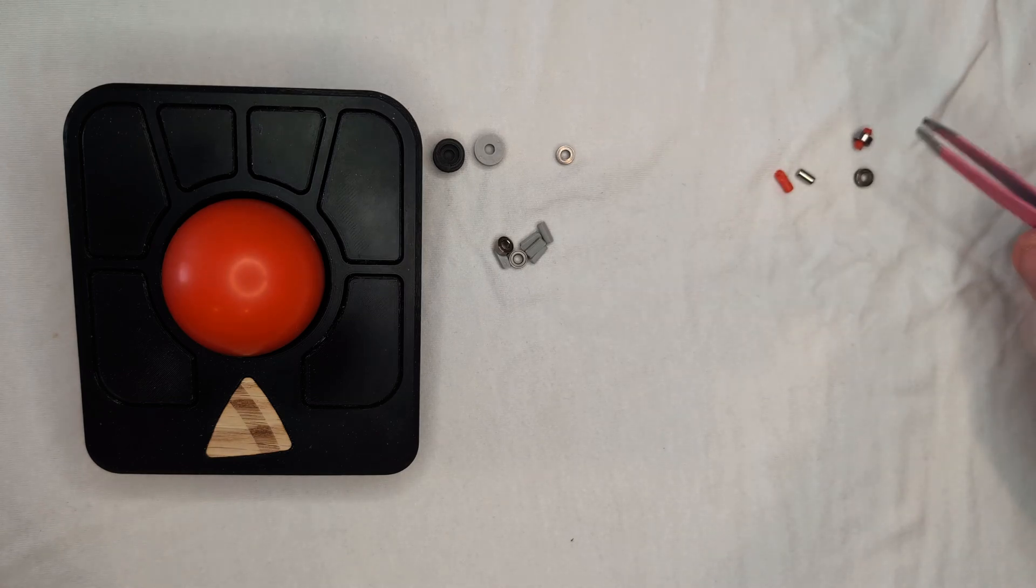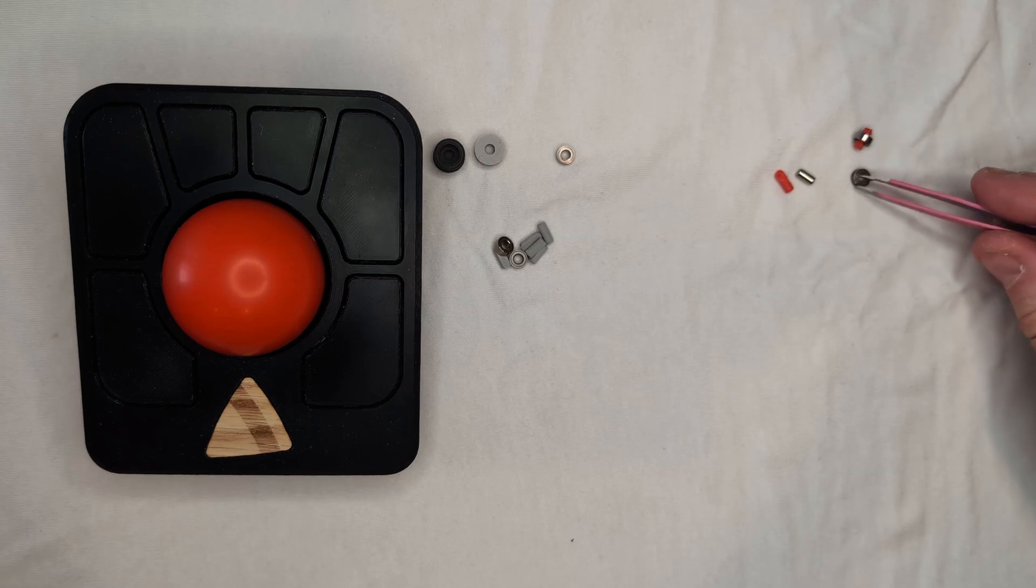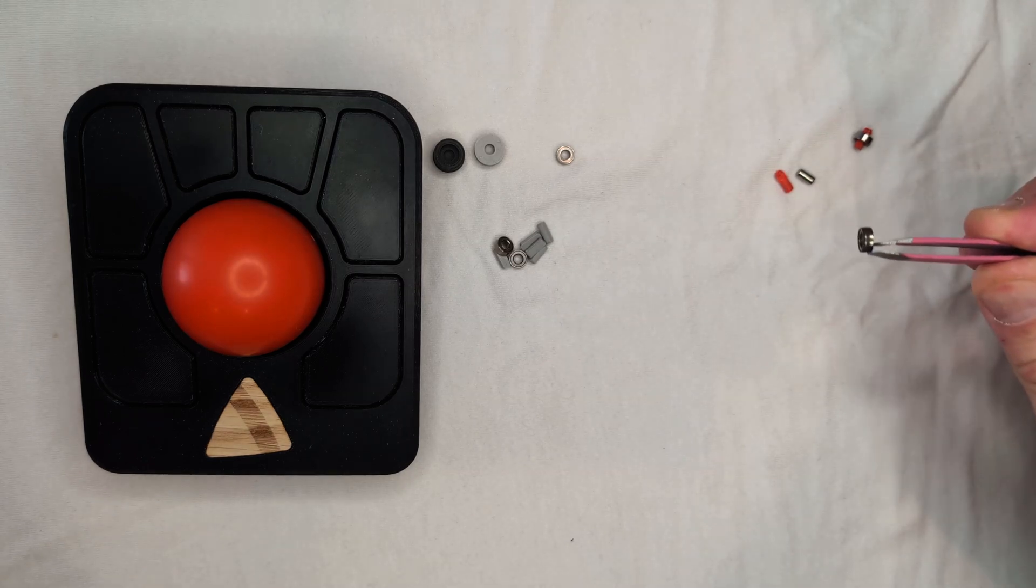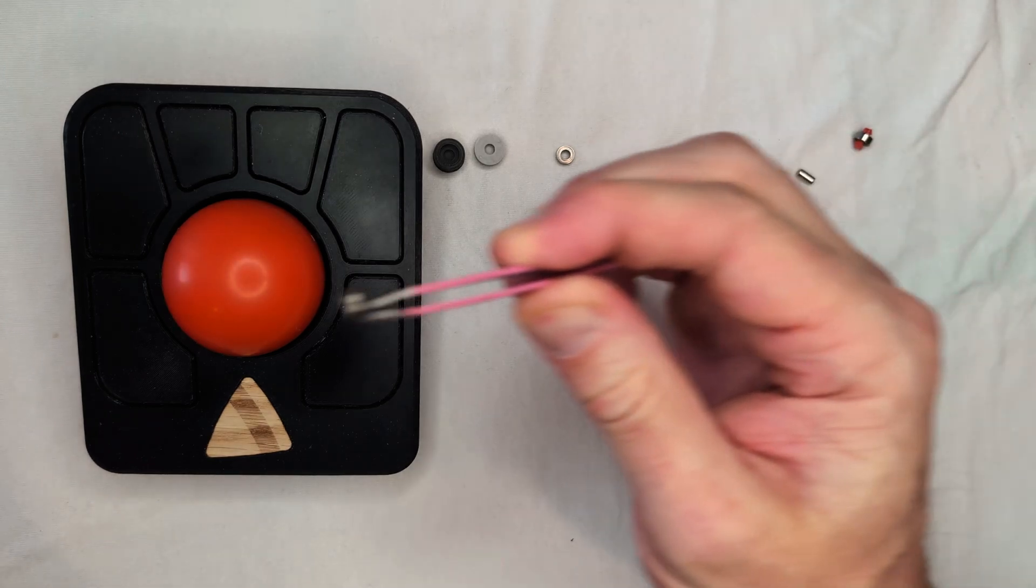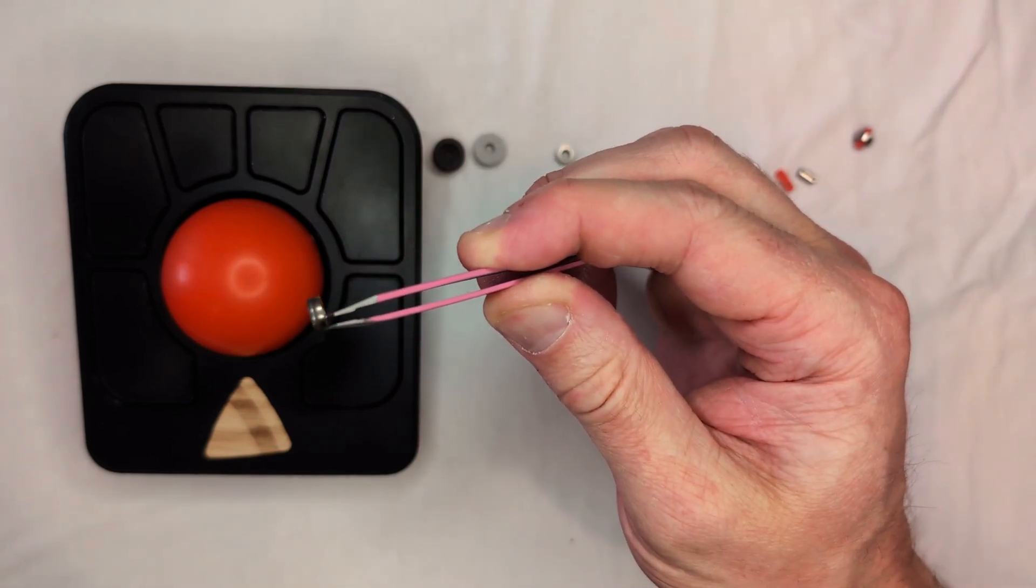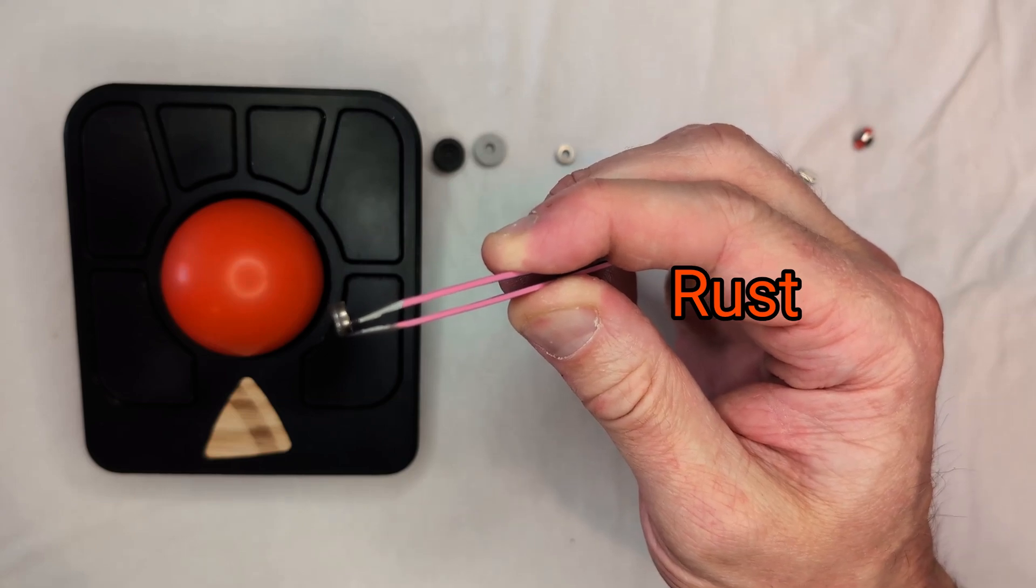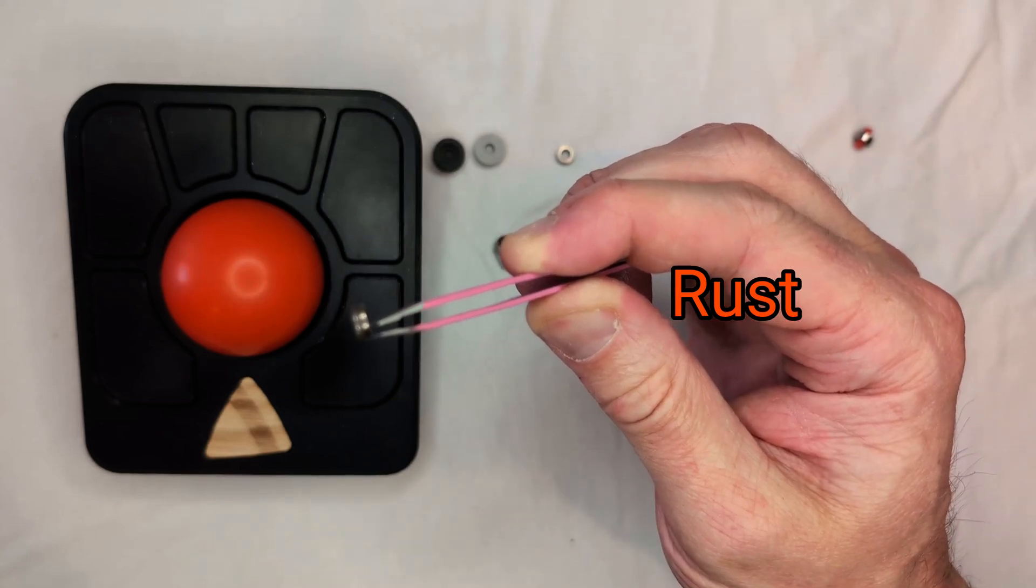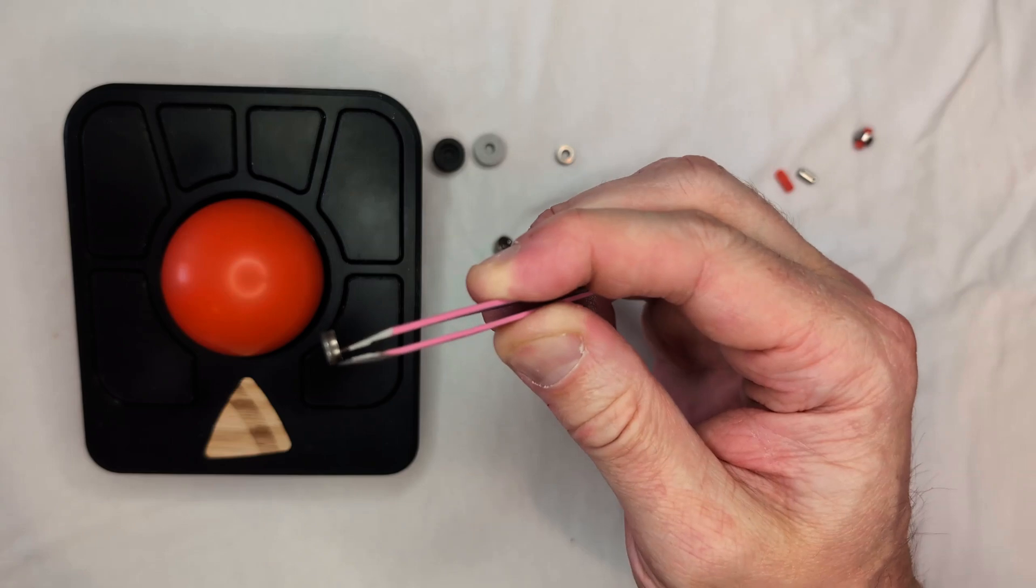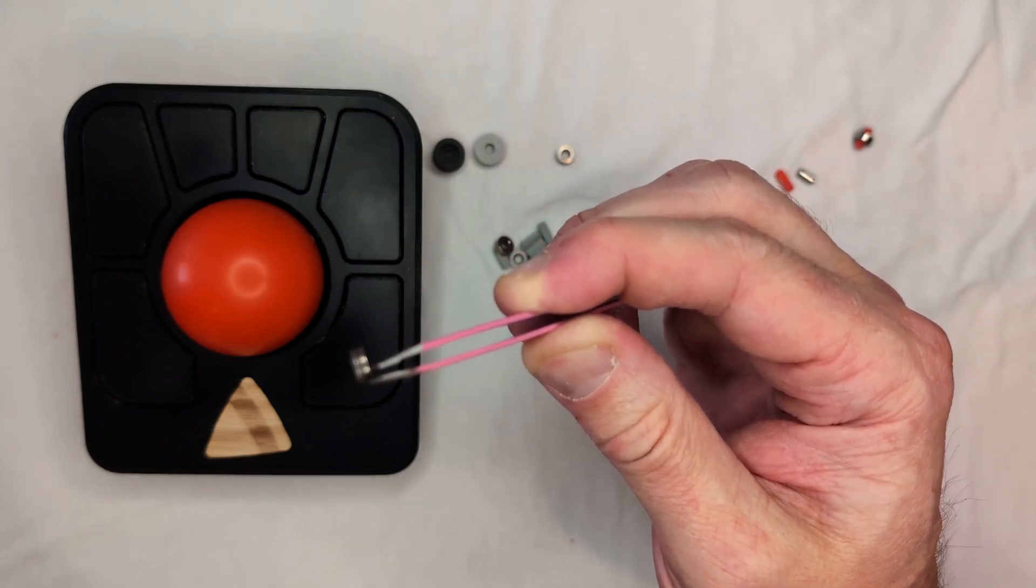But stiction does develop over the course of about a year. The cause is that these roller bearings are steel and they are not stainless steel. The camera is not picking it up very well, but what my eyes see right here is the classic coating of rough brown rust around the outer surface of the bearing. The ball grinds over that rusty surface and you experience stiction.